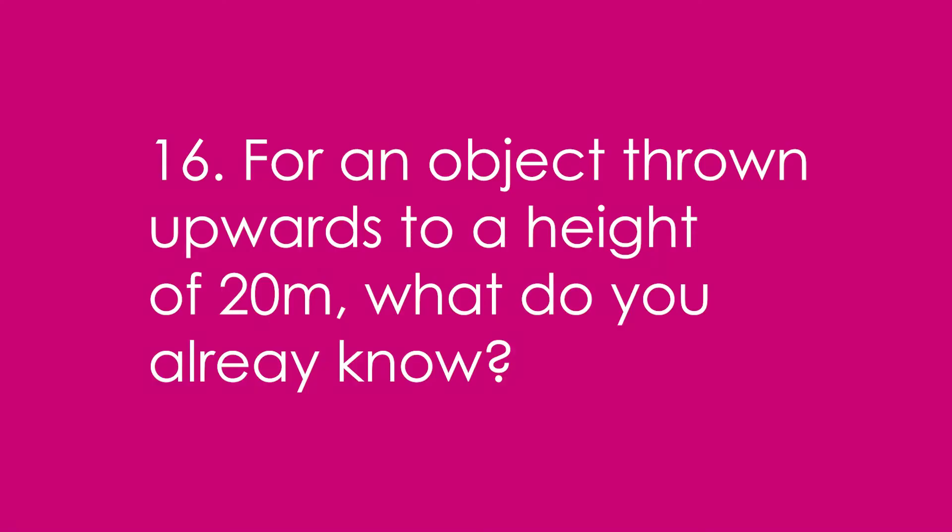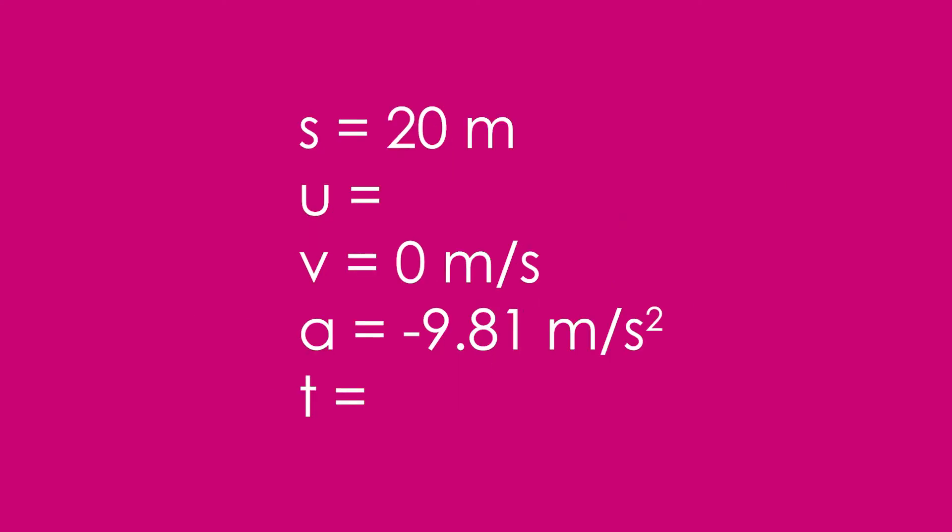16. For an object thrown upwards to a height of 20 meters, what do you already know? You know that S is 20 meters, final speed is zero at the top, acceleration is minus 9.81. Because if we're saying that up is positive, it's accelerating downwards, so it has to be minus.